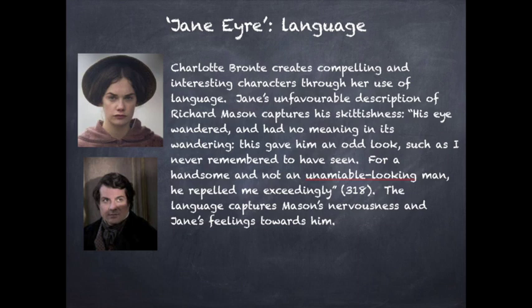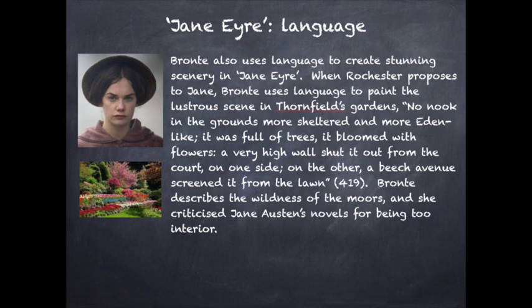Bronte also uses language to create stunning scenery in Jane Eyre. When Rochester proposes to Jane, Bronte uses language to paint the lustrous scene in Thornfield's gardens: 'No nook in the grounds more sheltered and more Eden-like. It was full of trees. It bloomed with flowers. A very high wall shut it out from the court on one side. On the other, a beech avenue screened it from the lawn.'